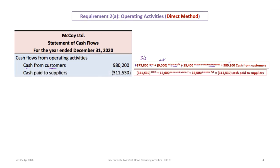The next item is cash paid to suppliers. The related accounts are cost of goods sold, inventory, and accounts payable — we purchase inventory, which turns into cost of goods sold when sold, and inventory is purchased on accounts payable. We start with an outflow of $341,530 for COGS, add the $12,000 decrease in inventory as an inflow, and add the $18,000 increase in accounts payable. Total cash paid to suppliers: $311,530.